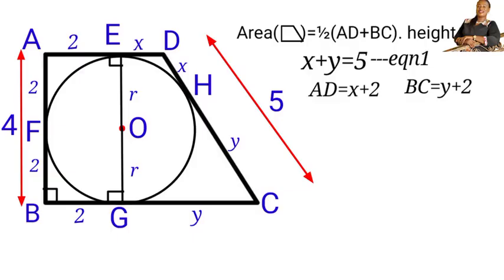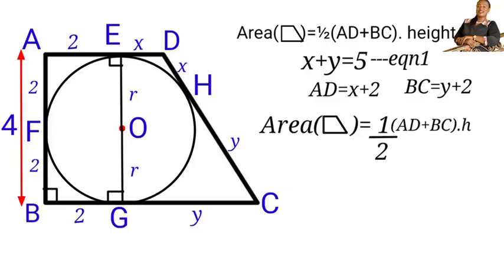Finally, we are in the final step to calculate the area of trapezoid ABCD. Now, let us recall the formula for area of trapezoid. Area equals 1 over 2 times AD plus BC times H. Now, let us go ahead and substitute the values in this formula. So, area of the trapezoid will be equal to half times AD is x plus 2, and our BC is y plus 2, times the height, which is 4.